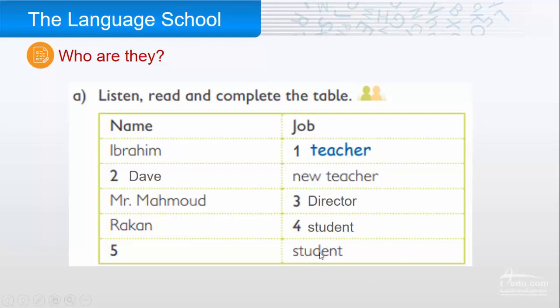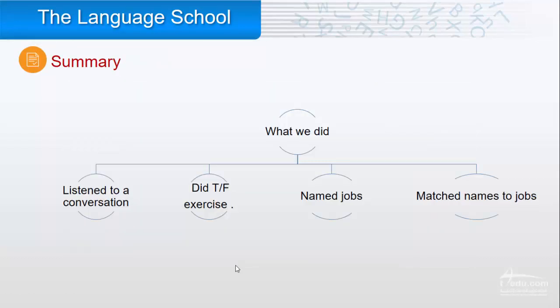Number five: who is the other student? Yasser — Yasser is a student. So in this video we listened to the conversation, we did the true and false exercise, we named the jobs, and we matched the names to the jobs.